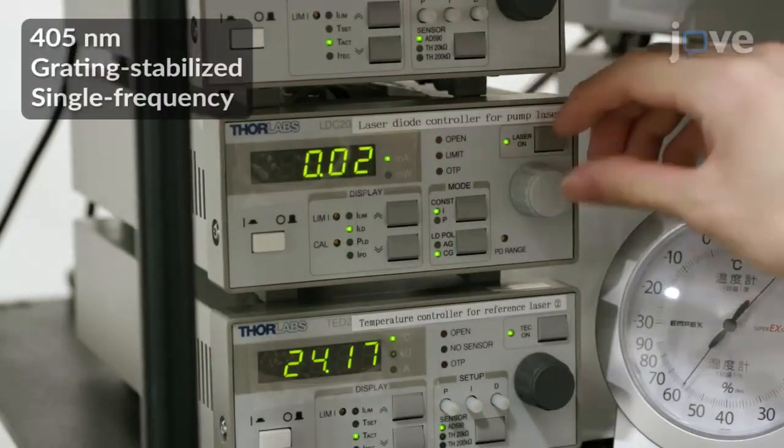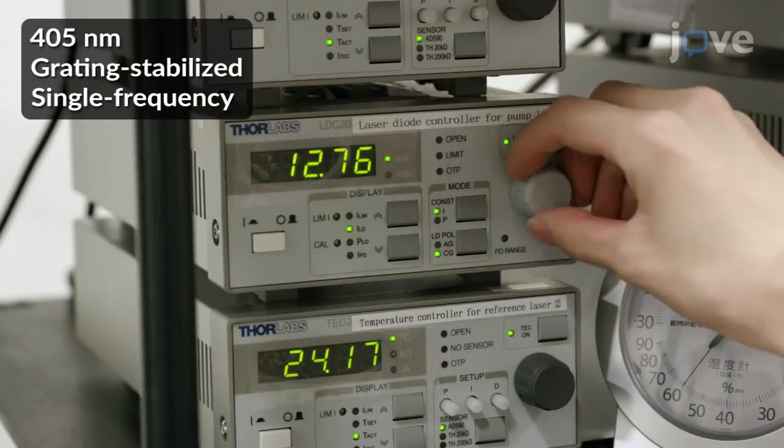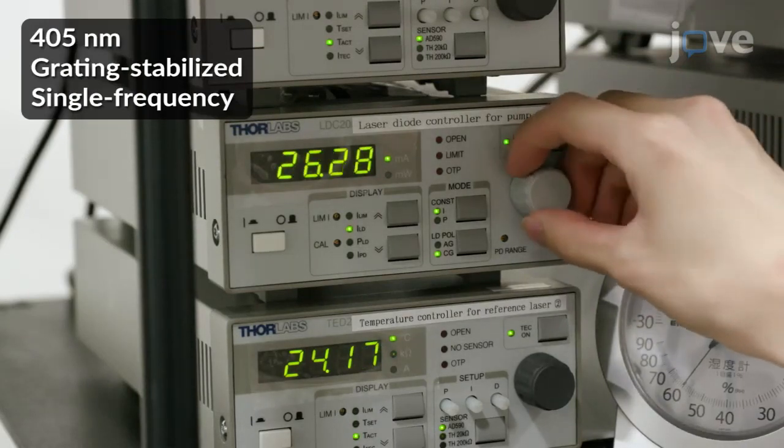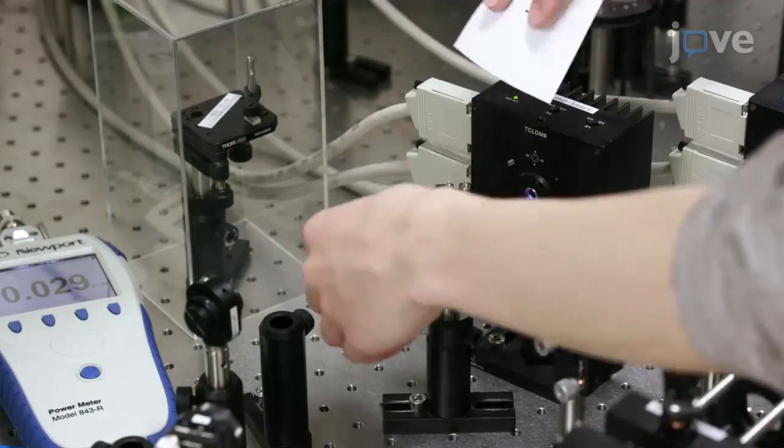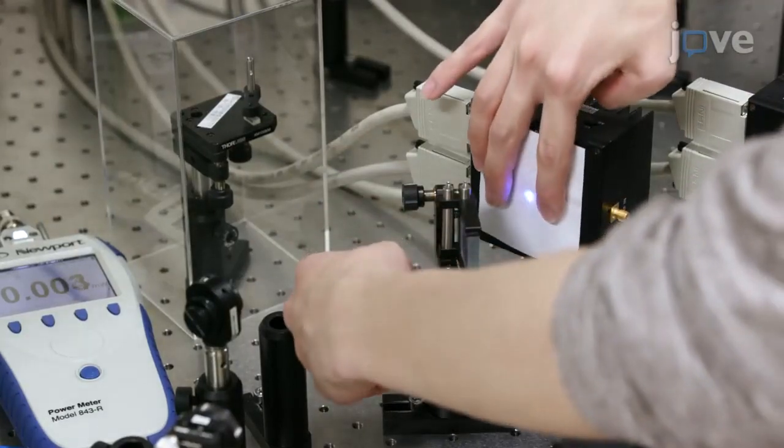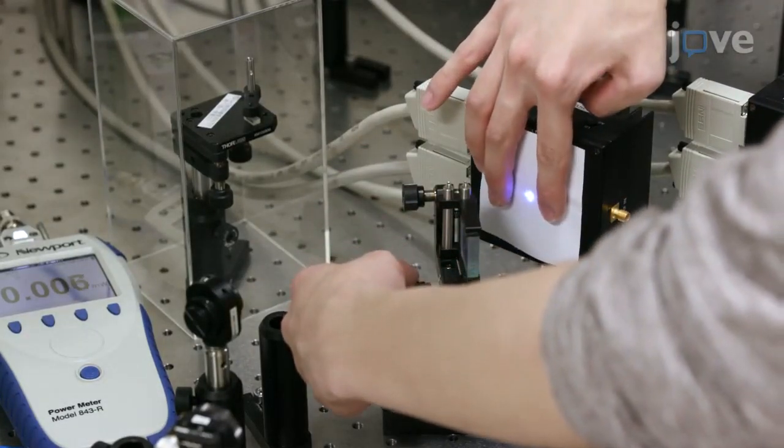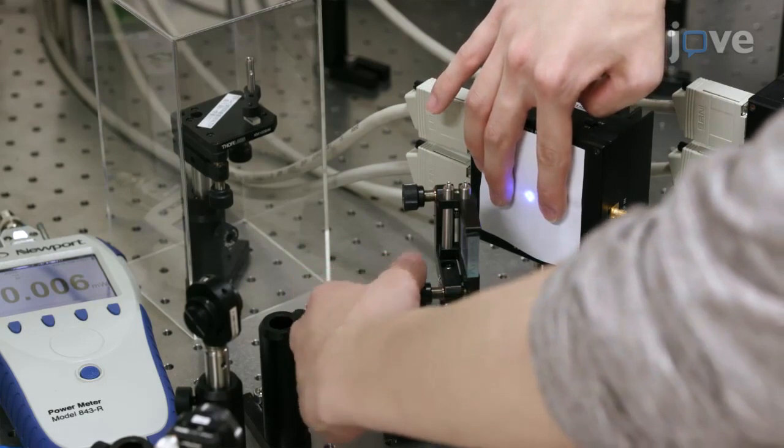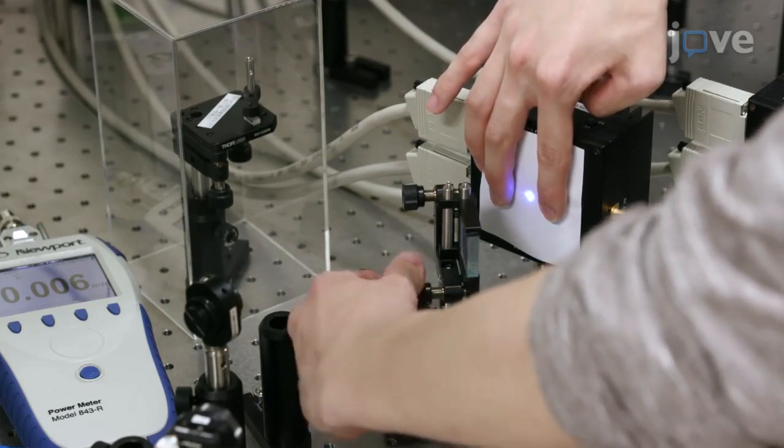To begin, turn on a laser diode and set the power to a few milliwatts. Place a holographic grating at about a 45-degree angle with respect to the laser diode surface and adjust the angle until the beam intensity appears to be maximized.